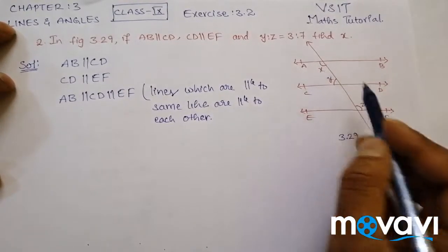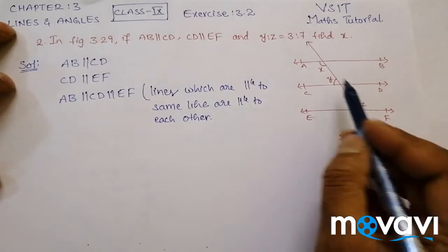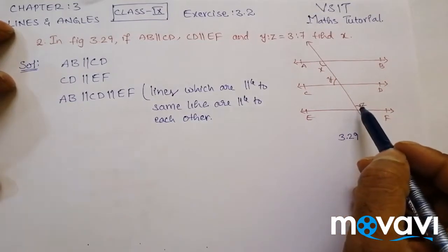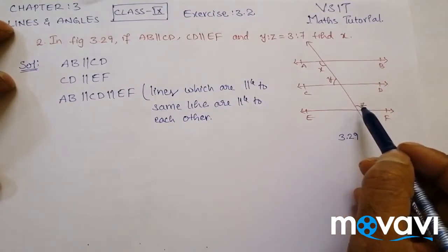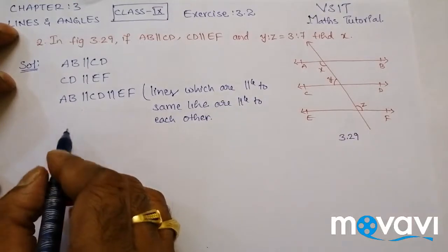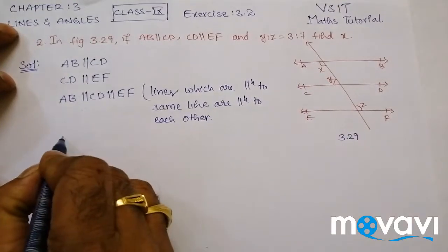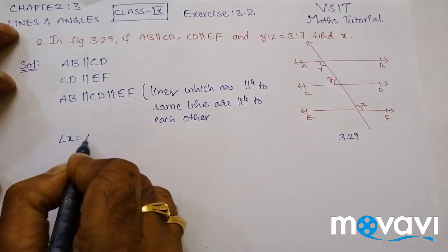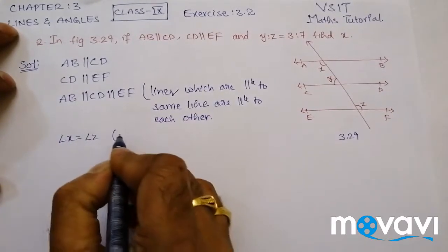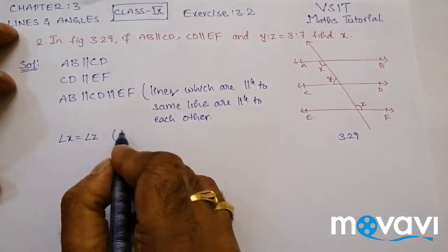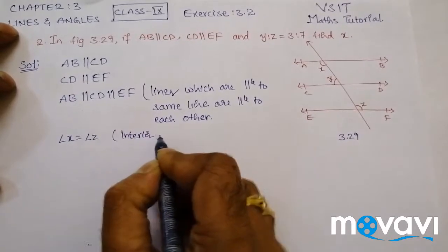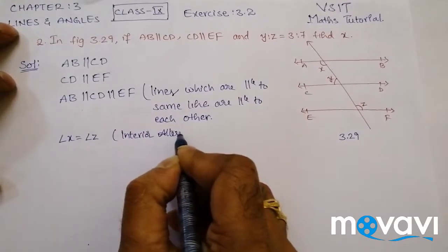So X will be equal to Z. Why? Because X and Z are alternate interior angles. So we can directly write angle X is equal to angle Z, because they are interior alternate angles.